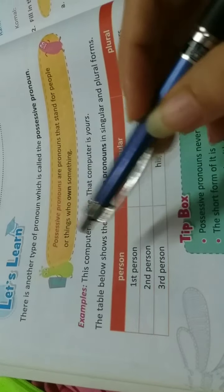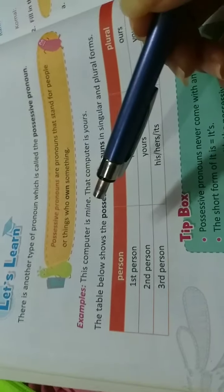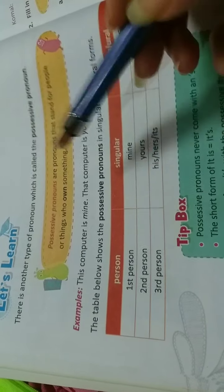Now, some more examples could be this book is hers. This book belongs to whom? To her. So, this book is hers. Hers will be a possessive pronoun here.